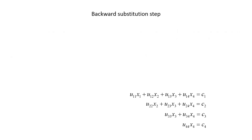The second step of the Gaussian elimination method is called the backward substitution step. In this step, we solve all the linear algebraic equations starting from the final equation and ending with the first equation. Solving the last equation for x4, we have x4 equals c4 divided by u44. Now x4 is known. Solving the third equation for x3, we have x3 equals the quantity c3 minus u34x4, divided by u33. Since x4 is known, we can obtain x3.